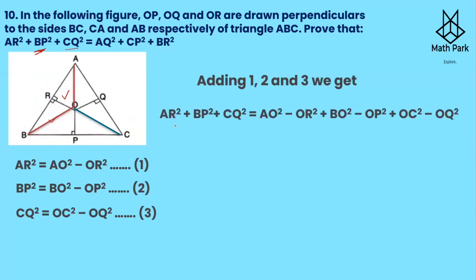Adding these three equations, the left hand side gives AR² + BP² + CQ², and the right hand side gives AO² − OR² + OB² − OP² + OC² − OQ². We need to rearrange the right hand side to get AQ² + CP² + BR².